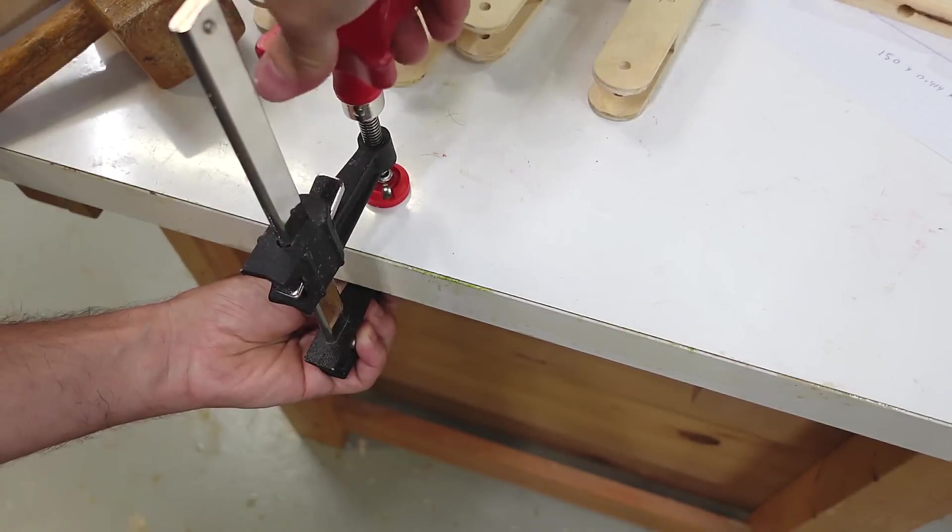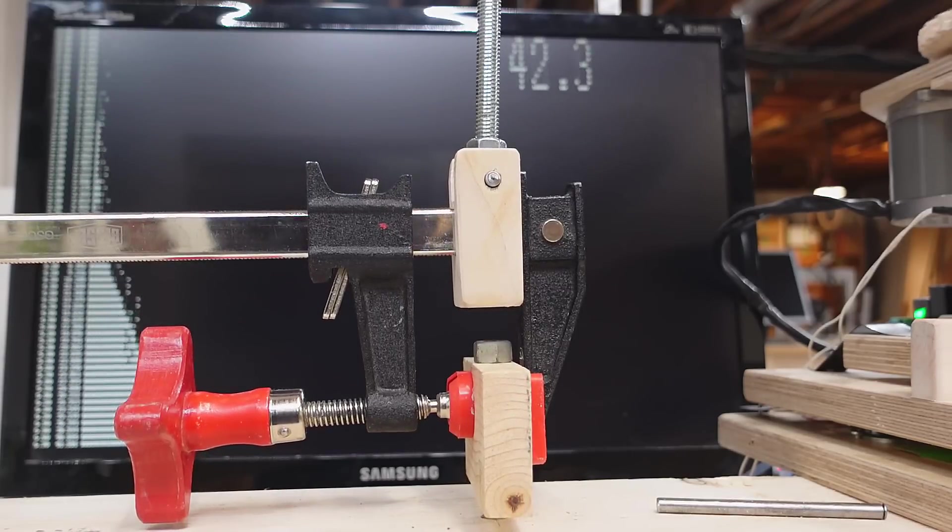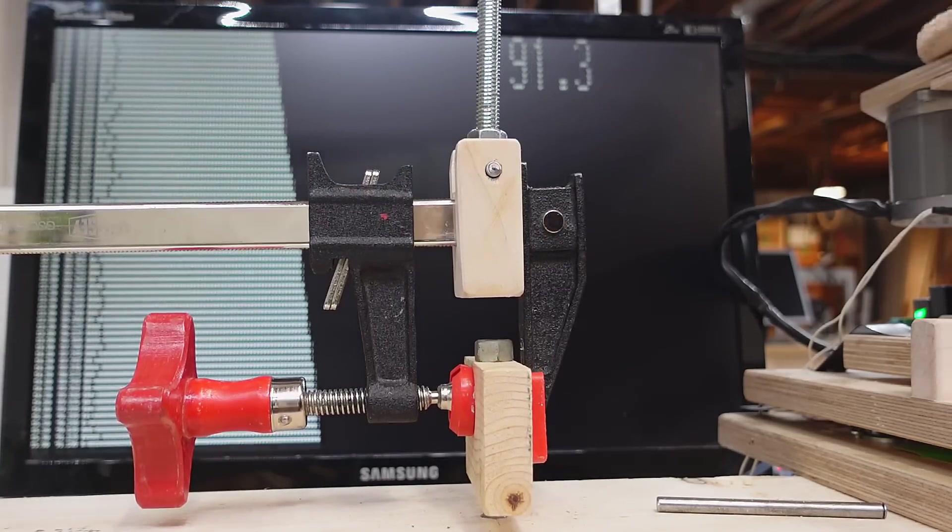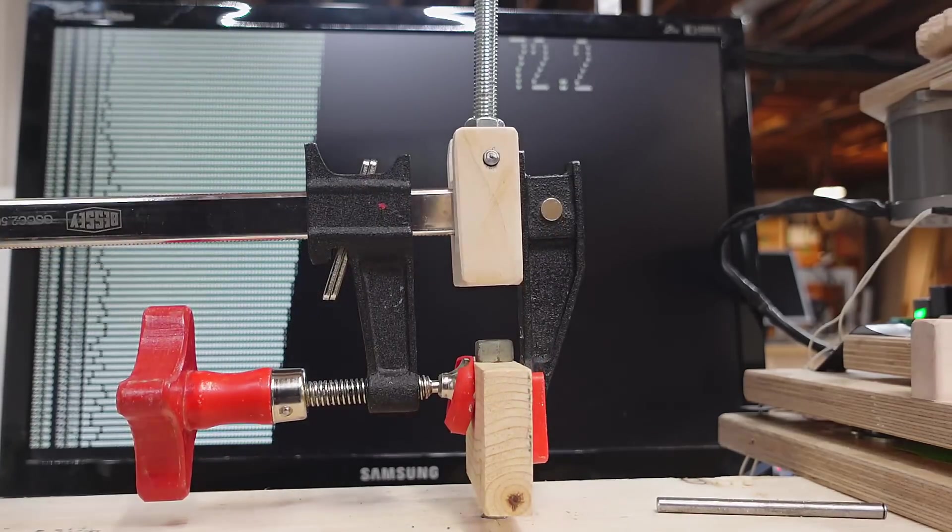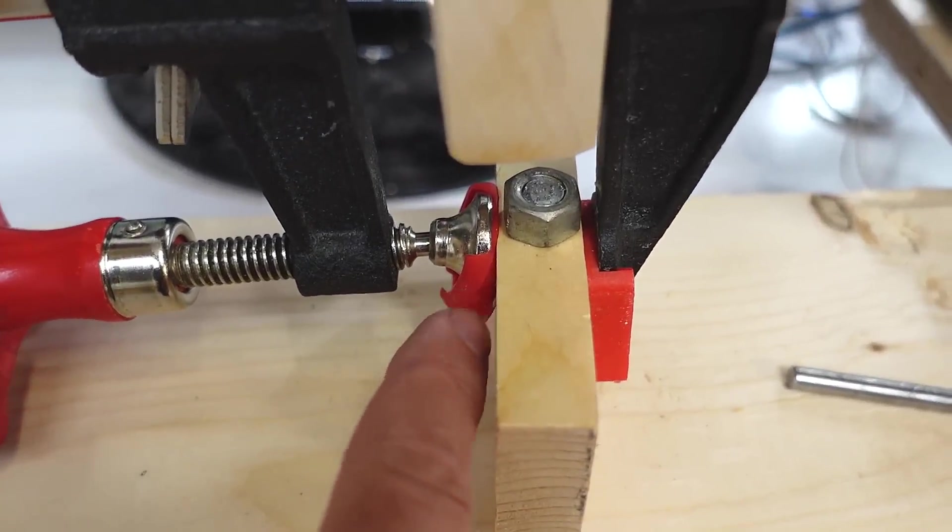So, the clamp's clamping force is always going to be about 2/3 of the spreading force on the frame. So, that makes me wonder how does my bar clamp edge clamping hack compare to that? So, let's see how much grip my bar clamp actually has on the edge.